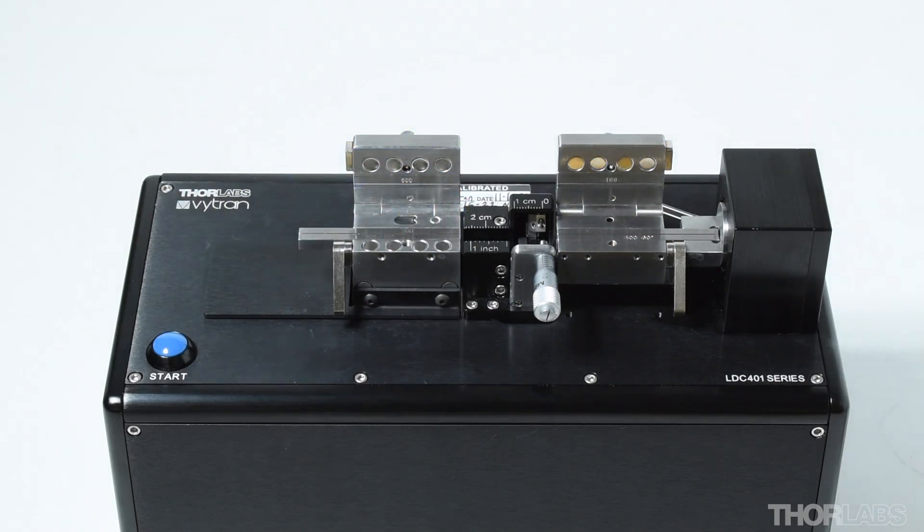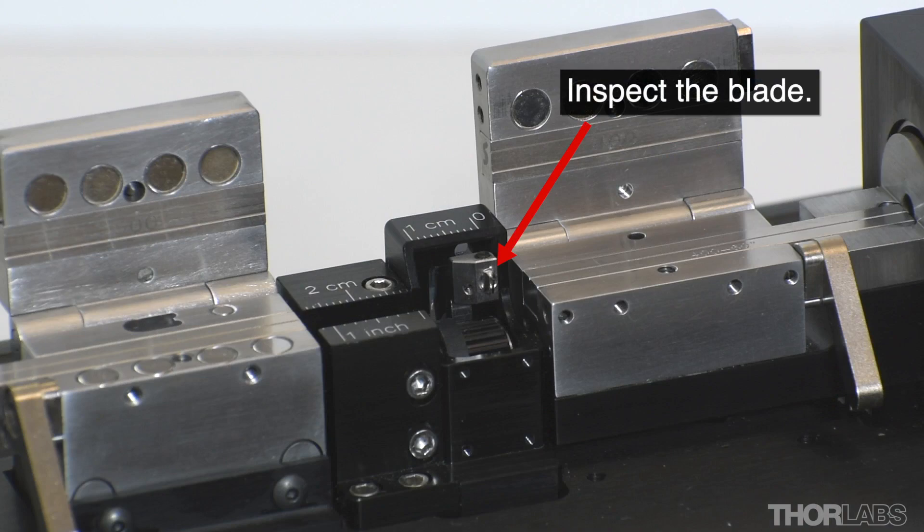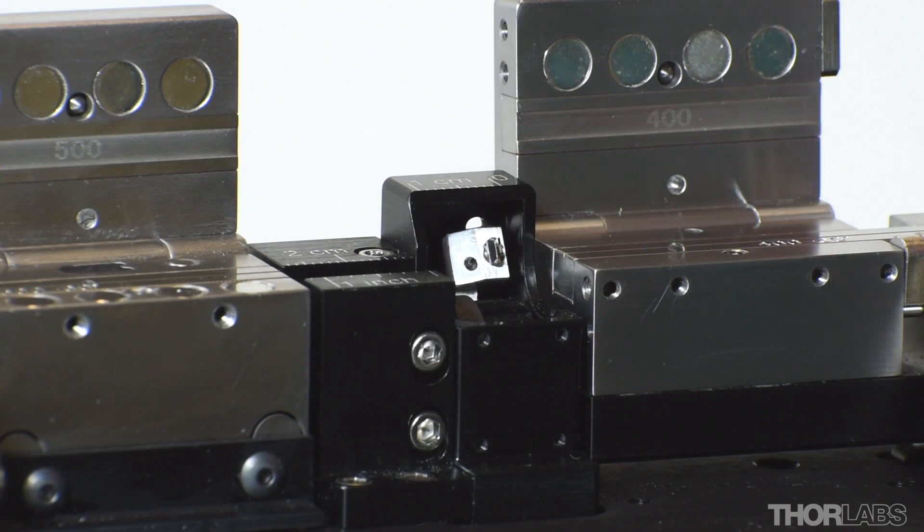If the cleave quality is still sub-optimal after cleaning the inserts, next inspect the blade. Inspect the blade for cleanliness and any signs of damage using a magnifying eye loupe. To inspect the blade visually, it will need to be moved to its service position.